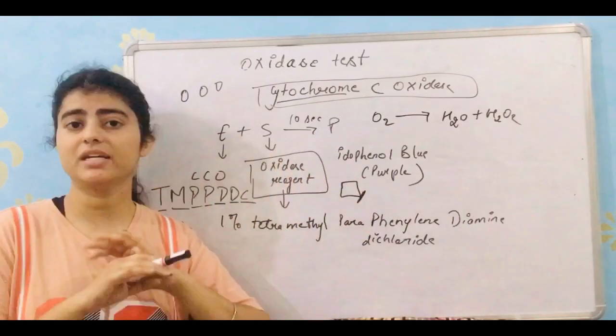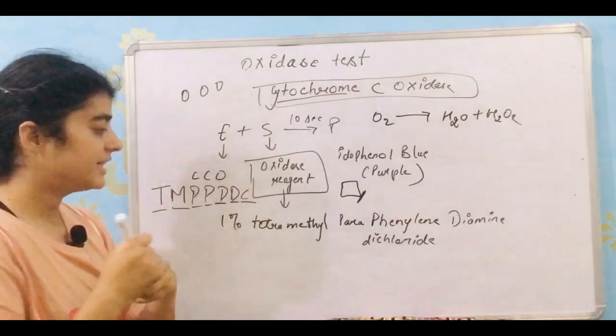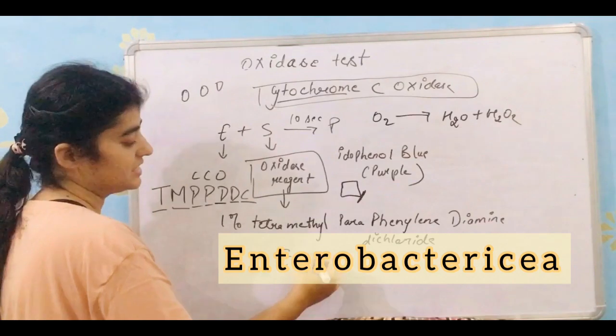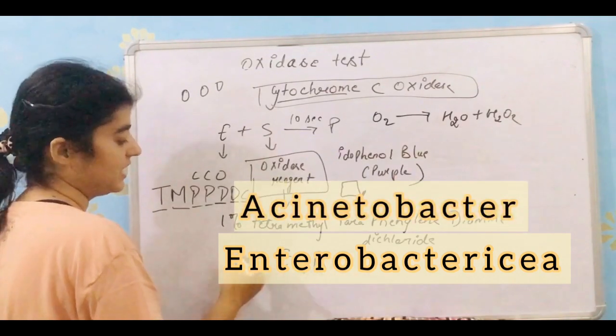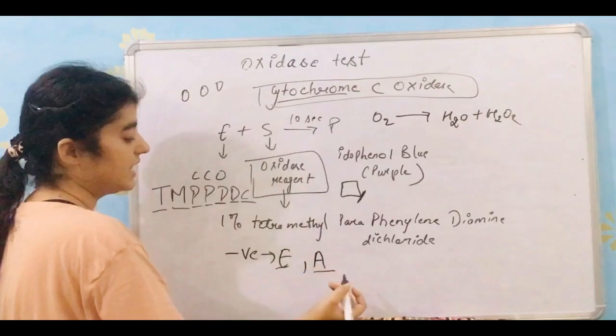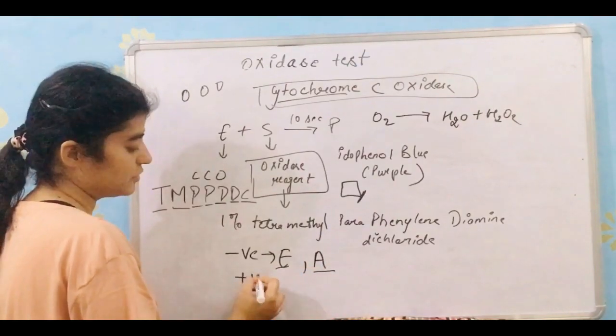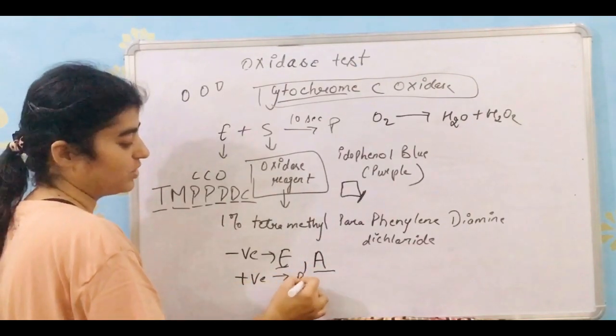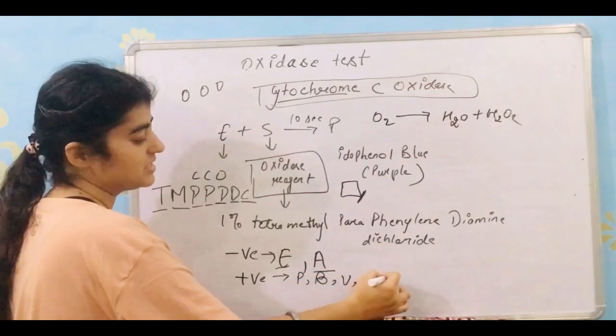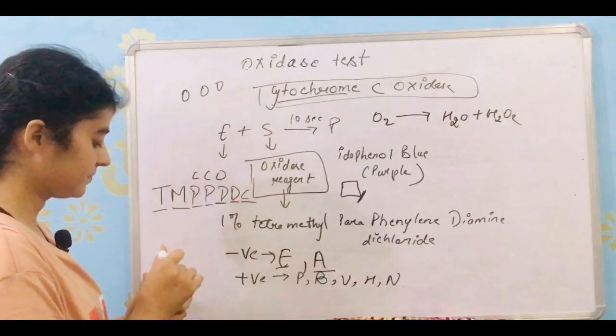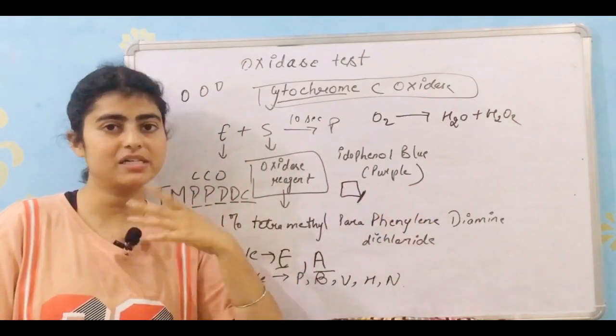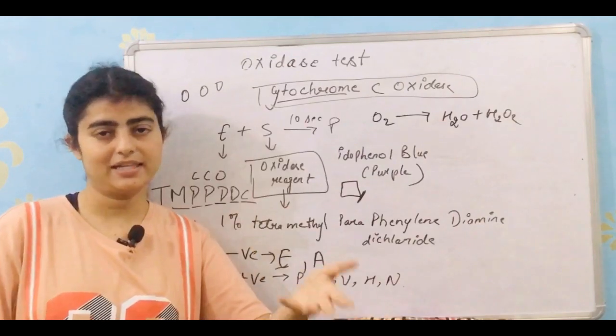And if there is no color change, then it would be either Enterobacteriaceae species or Acinetobacter. If it is negative then it would be either Enterobacteriaceae or Acinetobacter, but if it is positive then it may be Pseudomonas, Bacillus, Vibrio, Haemophilus, or Neisseria. So this is all about oxidase test. Now we will discuss some other, let's see.